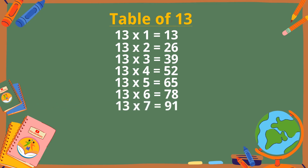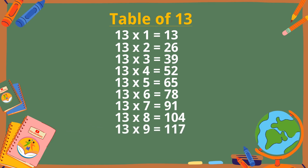13 sevens are 91. 13 eights are 104. 13 nines are 117. 13 tens are 130.